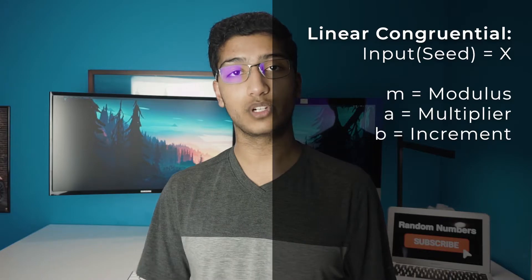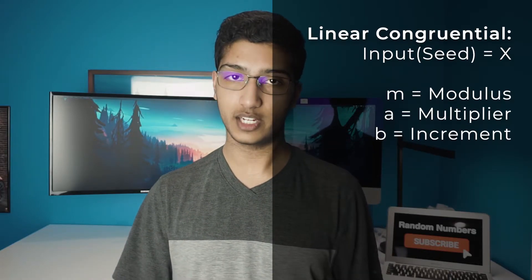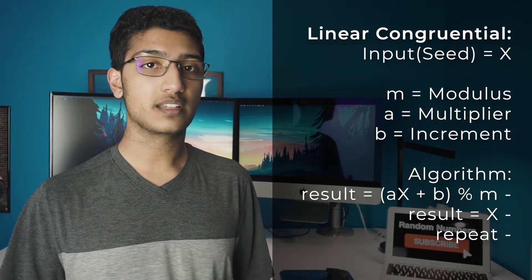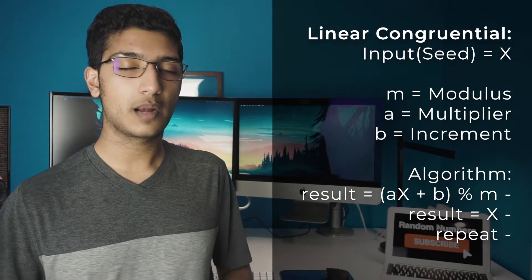This period is also visible in the linear congruential algorithm. We have M, which is the modulus; A, which is the multiplier; and B, which is the increment. The formula is: A times the initial seed value, plus B, then divide by M and take the remainder — this operation is known as modulus. The goal is to increase the number of steps before the cycle repeats, and in this algorithm that number is M, so you want M to be extremely large.